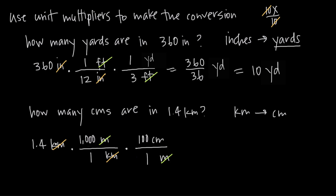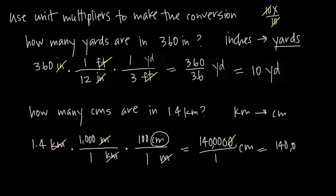Now we just go ahead and multiply across our numerators. We have 1.4 times 1,000 times 100. That gives us 14 with five zeros, and moving the decimal place gives us 140,000 in the numerator. In the denominator, 1 times 1 gives us 1, and the only units left are centimeters. So our final answer is 140,000 centimeters, which is the number of centimeters in 1.4 kilometers.